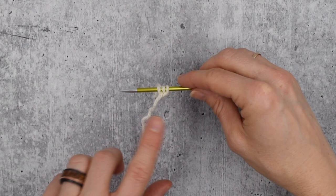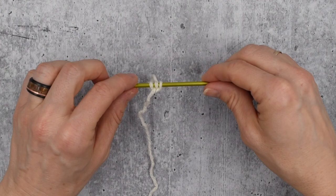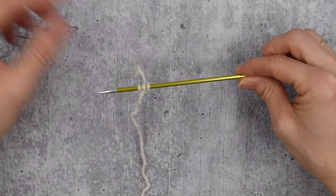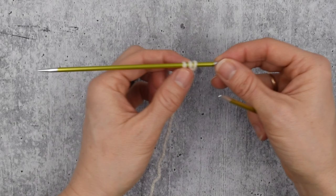Hello and welcome to a gnome basics video. In this video we're going to be talking about I-cord. I-cord is a wonderful way to knit in the round with very few stitches and not actually have to distribute the stitches across a bunch of needles.